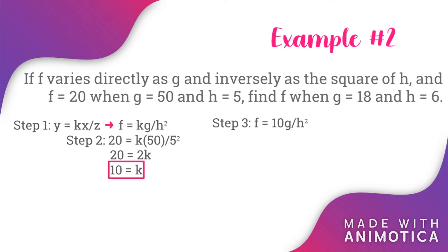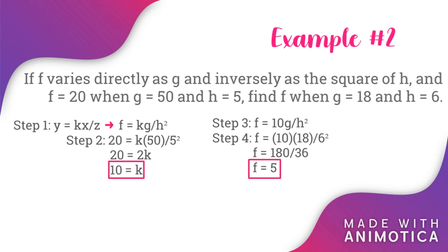Step number four: use the equation found in step three and the remaining information to answer the question. In this case, find f when g is equal to 18 and h is equal to 6. The equation is f is equal to 10 multiplied by 18 all over 6 squared. After simplifying the equation, we got f is equal to 5. This means f is equal to 5 when g is equal to 18 and h is equal to 6.